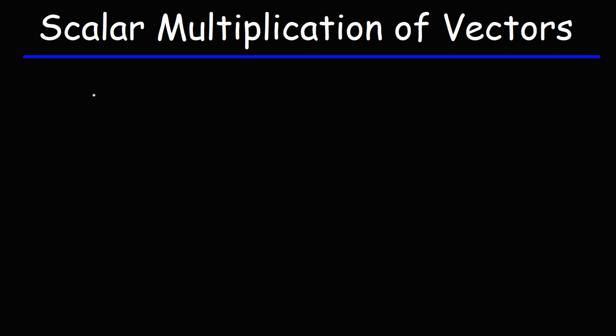When it comes to vectors, here it is. K times V is equal to Ka times the unit vector i plus Kb times the unit vector j. Now you might be wondering, what is this?